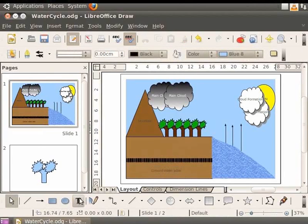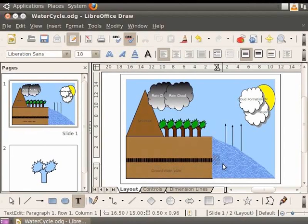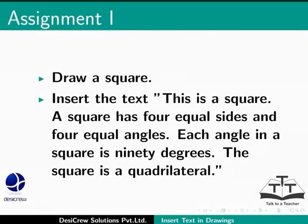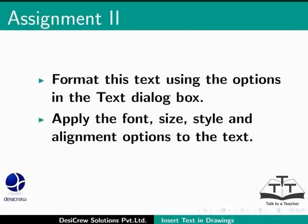In a similar manner, let's add the text 'Rainwater Flows from Land into Rivers and Sea' in the triangle. Pause this tutorial for the assignment: draw a square and insert the text 'This is a square. A square has four equal sides and four equal angles. Each angle in a square is 90 degrees. The square is a quadrilateral.' Format this text using the options in the text dialog box, applying font size, style, and alignment options.